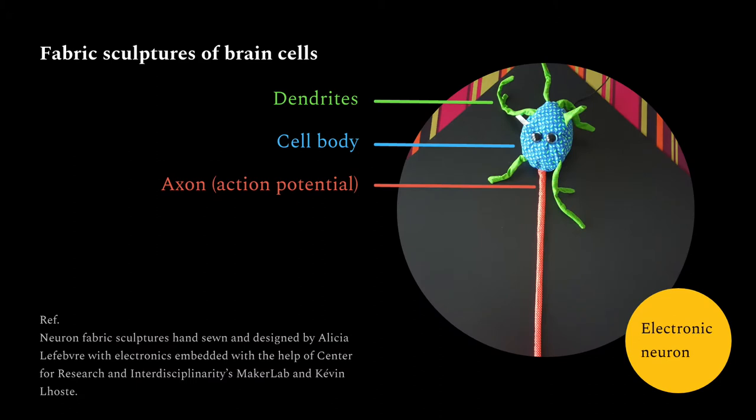Different kinds of cells inhabit our nervous system. The neurons are the best known. A neuron is made up of three different parts. The cell body, shown in blue, contains the nucleus and controls the activity of the cell. The dendrites, in green, are antenna-like structures that receive messages from other neurons. The longest process, in orange, called the axon, spreads the electrical message, represented by the shining lights you will see in action.